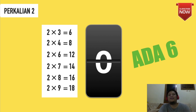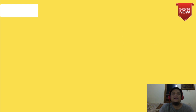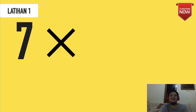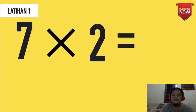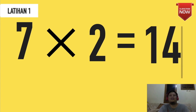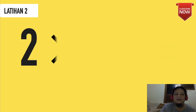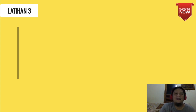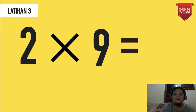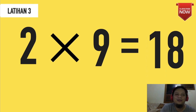Agak cepat ya, gak apa-apa. Semakin cepat, kalian akan semakin cepat pula untuk menghafal. Latihan 1: berapakah hasil dari 7×2? Ingat sifat pertukaran atau sifat komutatif, 7×2 sama dengan 2×7 yaitu 14. Lanjut latihan kedua, 2×4 sama dengan 8. Latihan 3, 2×9 berapakah? Tepat sekali, 18. Semoga kalian sudah hafal untuk perkalian 2.